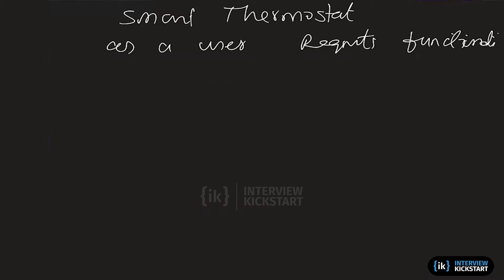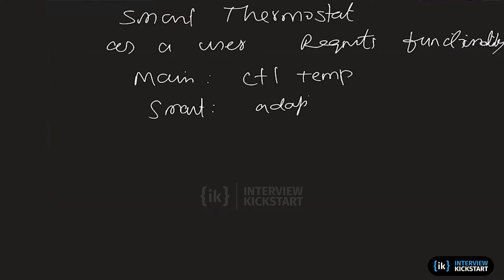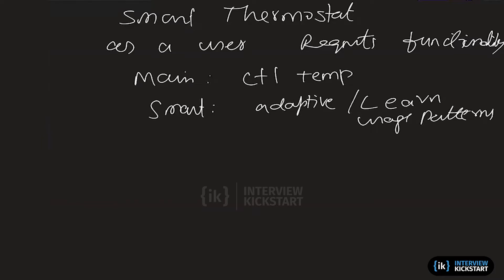Non-functional requirements may not be possible to list immediately, but do you know what a thermostat is supposed to do? The main functionality is to control temperature. There may also be other smart functionality — how adaptive it is, or can it learn usage patterns. As a user, instead of freezing, you can think about what you've seen, read about, or used, and describe this. Then you can elaborate on these requirements.